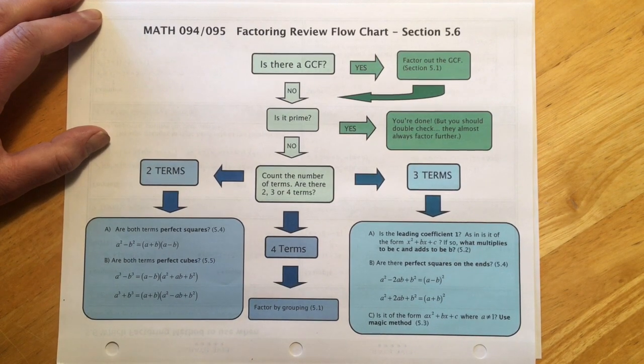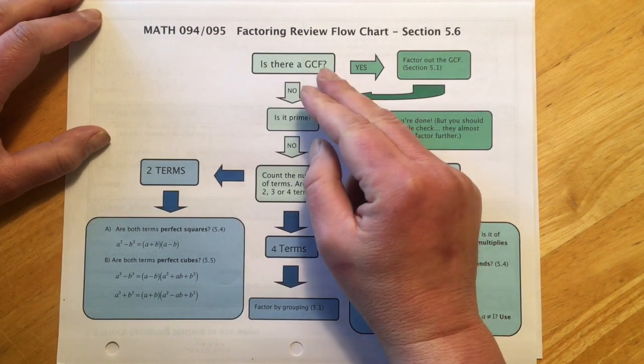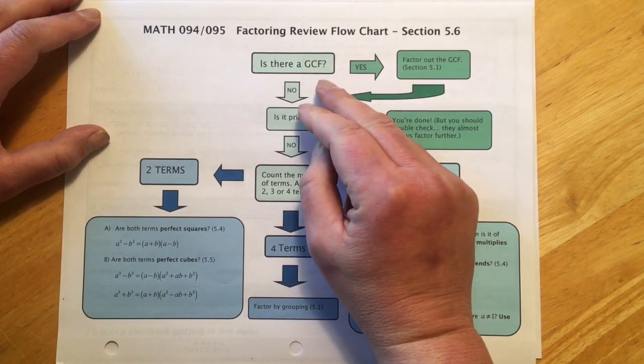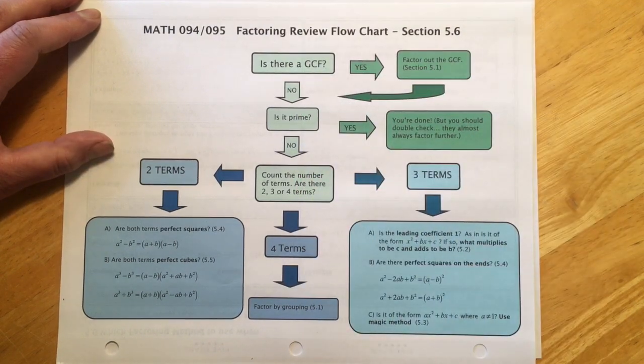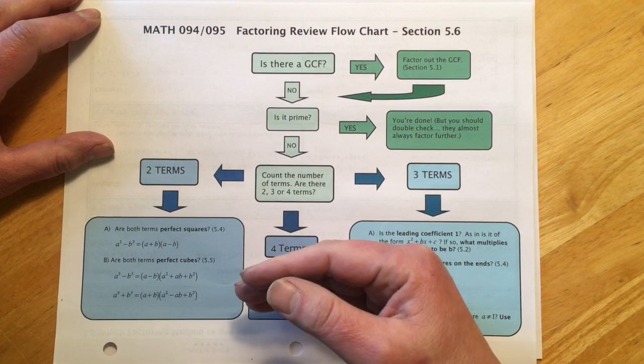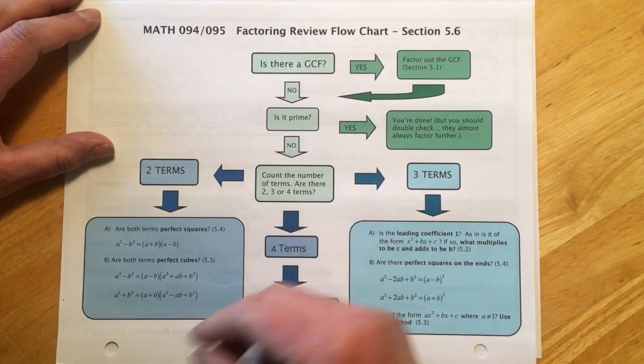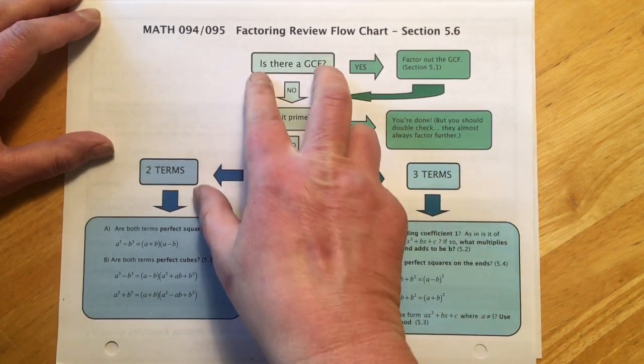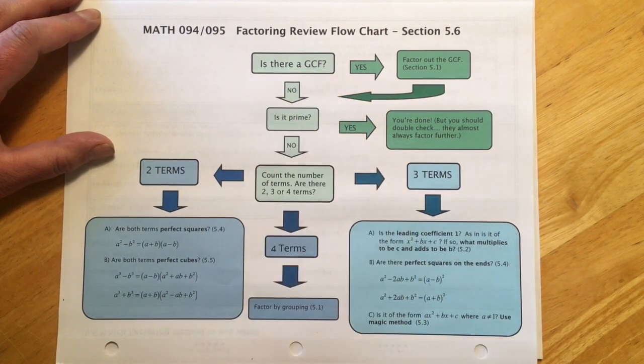Your first step for every factoring problem is get the GCF out of the way and I can't overemphasize how important that is. Pretty much on exams when people don't get the GCF out of the way they get it wrong. It's possible to recover at the end, but almost no one does. Got to do this as your first step. It'll help you a bunch.